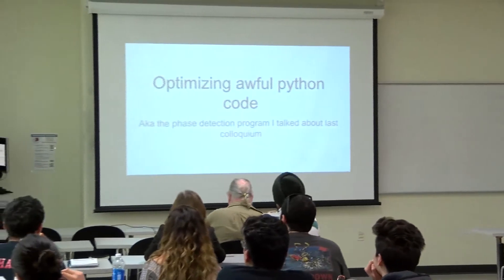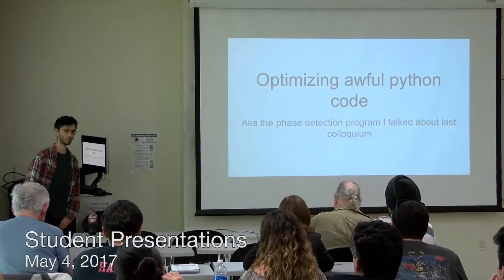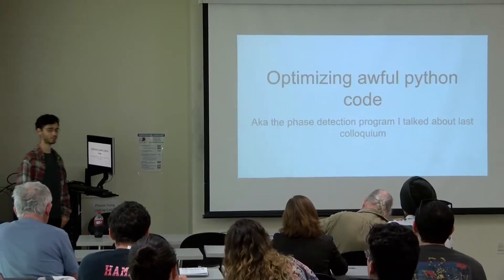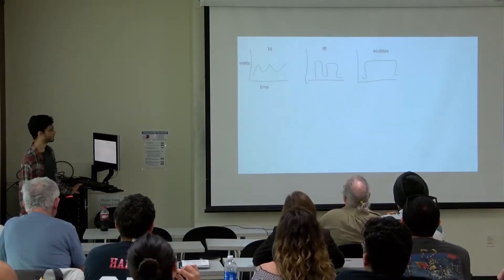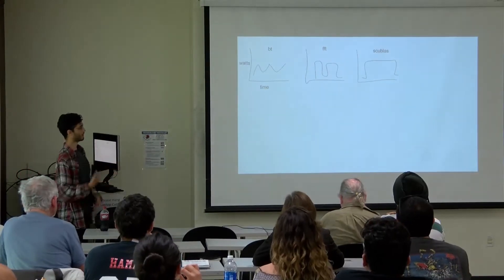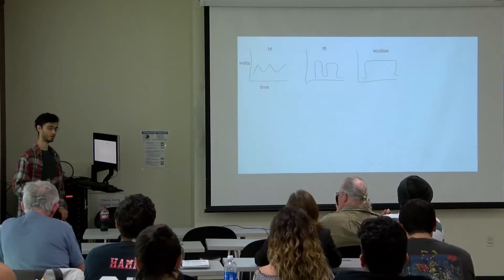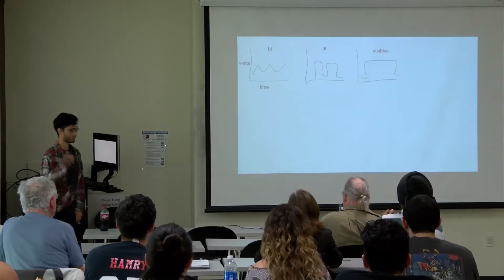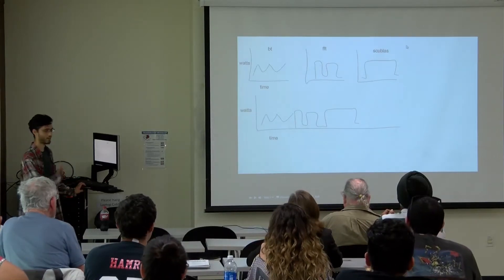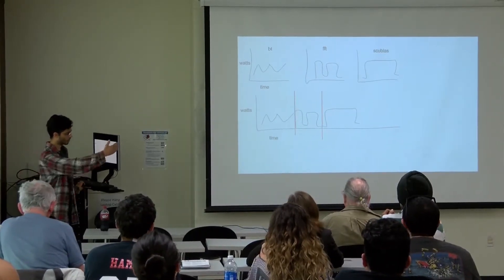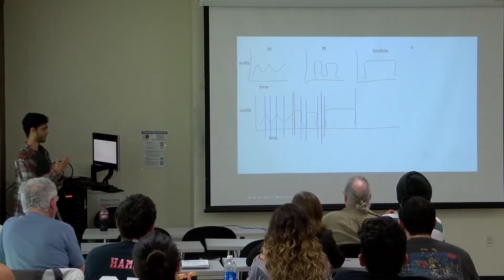This is for my 496, which I did this semester. It's an extension of the phase detector that I talked about last colloquium. The code was absolutely awful, so I spent this semester making it less awful. So just a brief recap — we took these power traces where we measured how much power a computer used, and we got a series of data points. Then we would concatenate them together and try to predict what those phases were — here are the actual splits, and here are what we detected would be the splits.